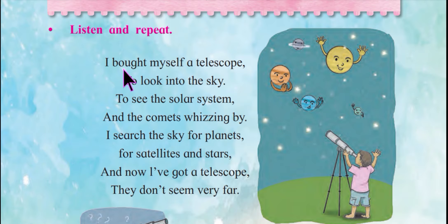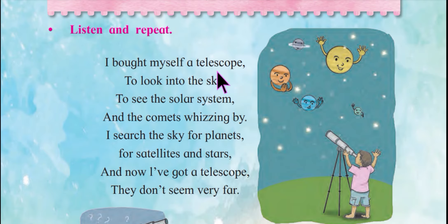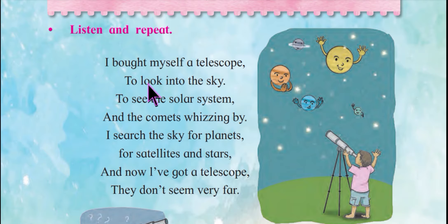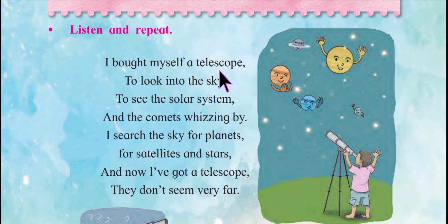I bought myself a telescope. What is the telescope for? To look into the sky. 'Look' means to see. So he bought a telescope to look into the sky — to see what is up in the sky.